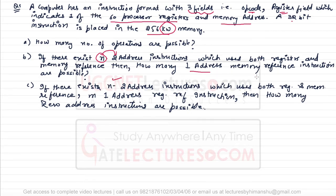Part three: if there exist n two-address instructions using both memory reference, and m one-address instructions which are register-to-register reference instructions, then how many zero-address instructions are possible? Try to pause the video and solve the problems before checking the solution.